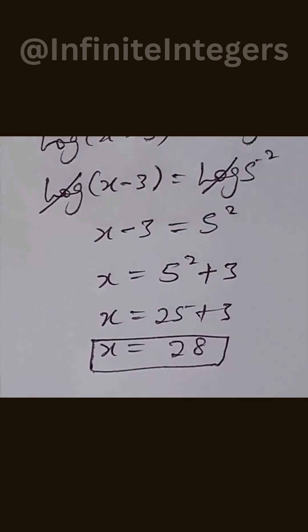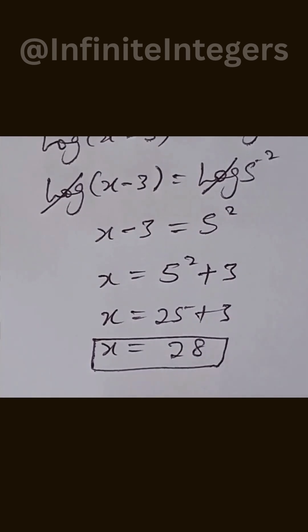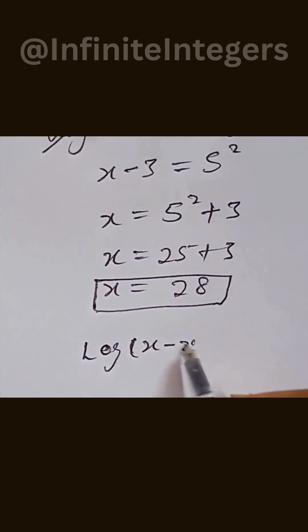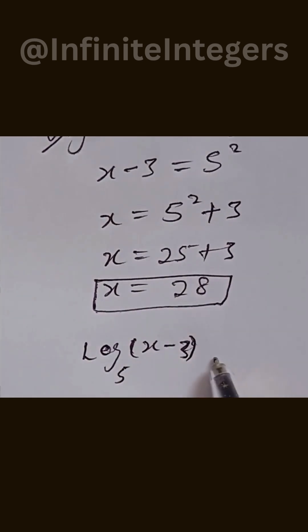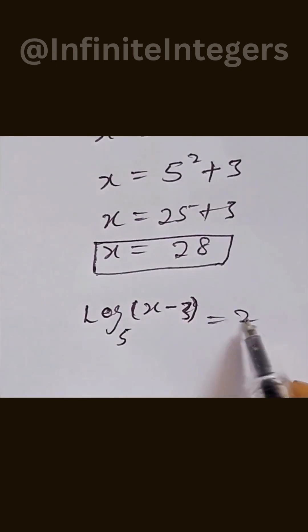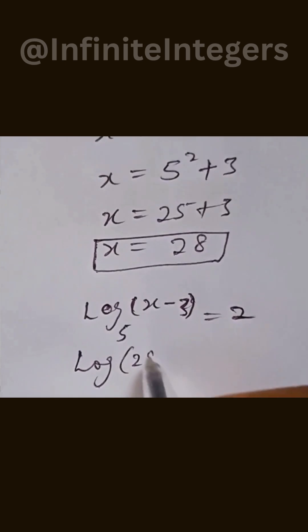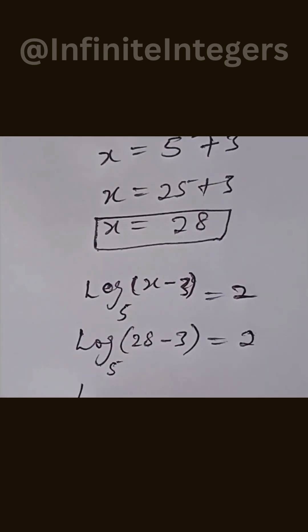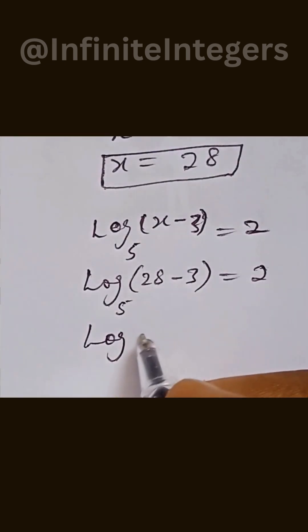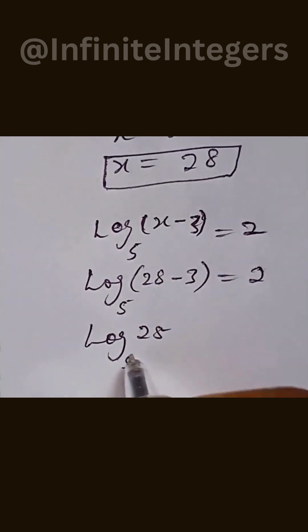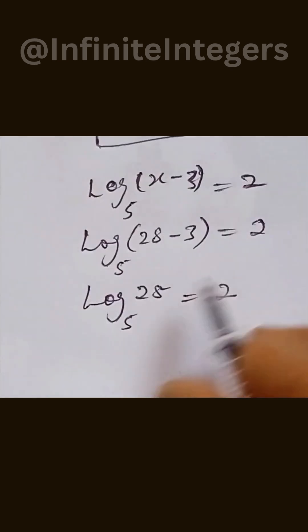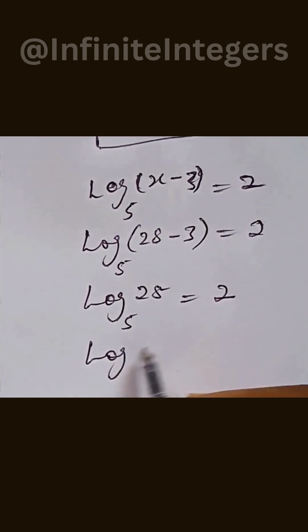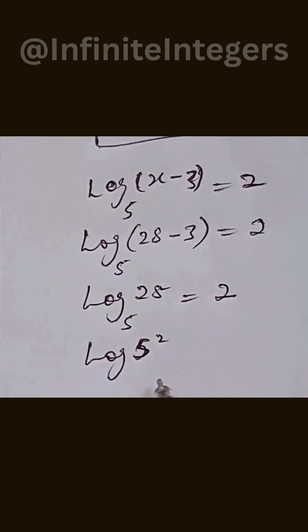So this confirms that log base 5 of (x minus 3) equals 2. To verify, we substitute x equals 28: log base 5 of (28 minus 3) gives us log base 5 of 25, which equals 2. We can rewrite 25 as log base 5 of 5 to the power of 2, which equals 2.